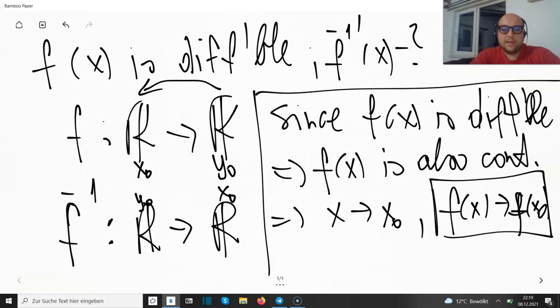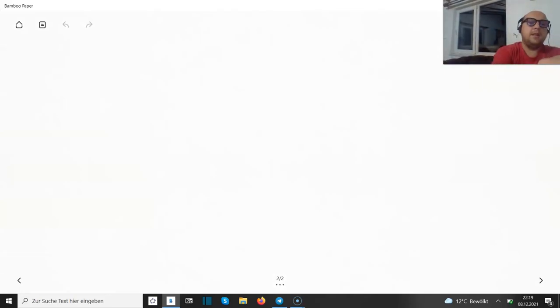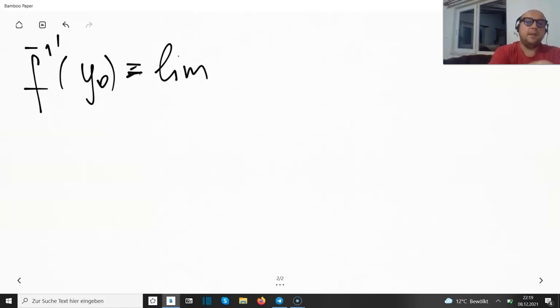And what we're handling now is f^(-1)' at y₀. But remember that we're dealing with the range, so it's y₀. What is the definition by the first principle? This is the limit as y is running towards y₀.